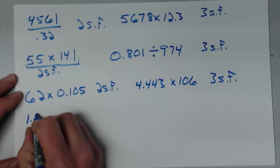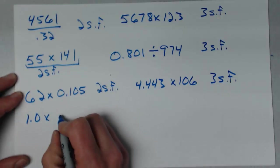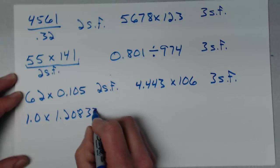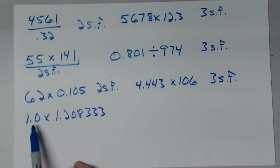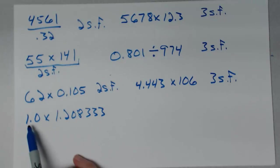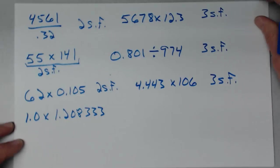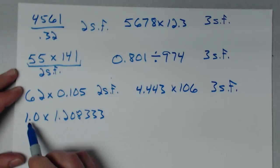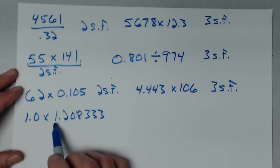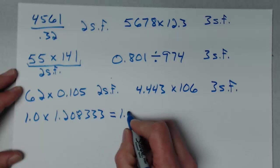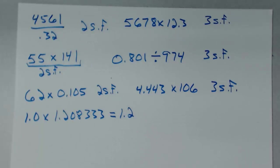Next: 1.0 times 1.208333. This has two significant figures, and 1.208333 has seven significant figures. But since 1.0 has only two significant figures, that's all I can keep. This one I can do in my head — if I multiply something by one, it won't change it — so the answer is 1.2. That's all I can keep there.